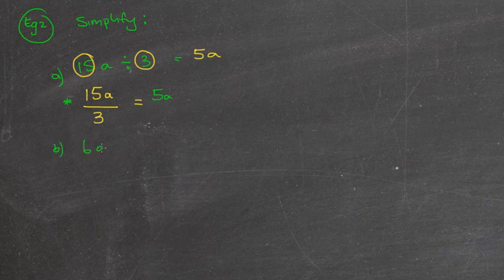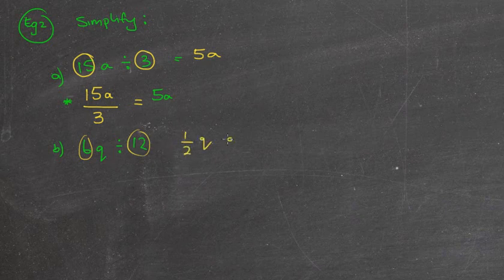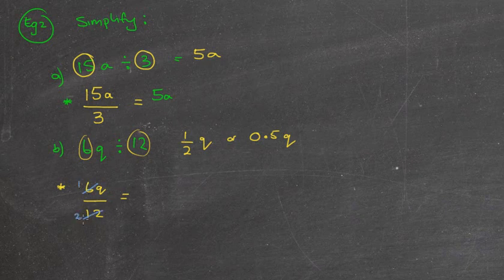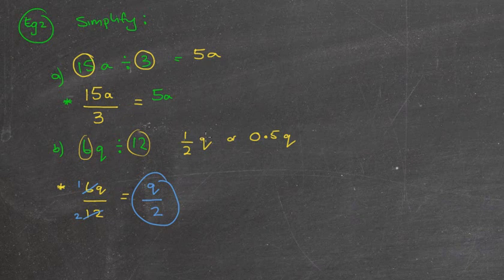We can do 6q divided by, let's say, 12. The reason why I'll show you, again, two ways. The first way, 6 divided by 12 is a half, and then I've got q. Or you could probably write as 0.5q. That's okay. But probably the way I prefer is this. I'm going to rewrite it as 6q over 12. Make sure you always write down the actual question correctly. Now, remember when you're simplifying fractions, 6 goes into 6 once, 6 goes into 12 twice. So I've got 1q over 2, which is just q over 2, which is the same as a half q and 0.5q, but I probably prefer it to be written that way.